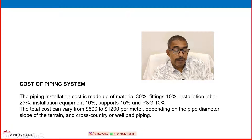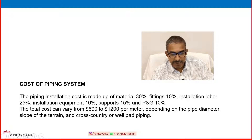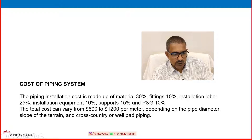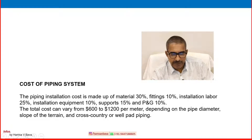The cost of the piping system is also an important factor. Piping installation cost is made up of: material 30%, fittings 10%, installation labor 25%, installation equipment 10%, supports 15%, and engineering around 10%. Total cost can vary from $600 to $1200 per meter depending on the pipe diameter, slope of the terrain, and whether it is cross-country or well pad piping.